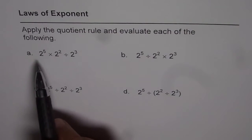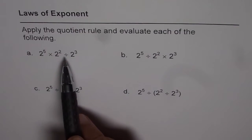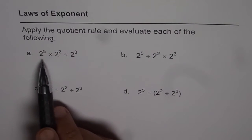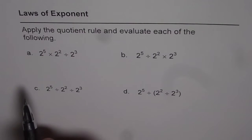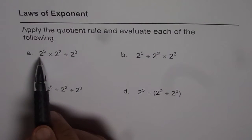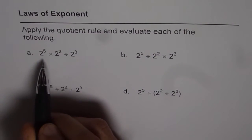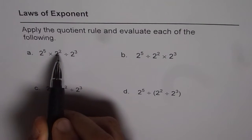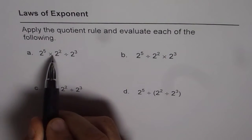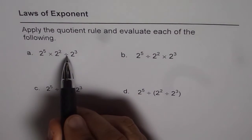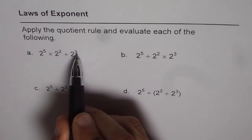The first question is 2 to the power of 5 times 2 squared divided by 2 cubed. Whenever you have both multiplication and division you have to do from left to right. So the first operation is 2 to the power of 5 times 2 squared. Whenever it is times you will add the exponents, and when you divide you will take away the exponent.